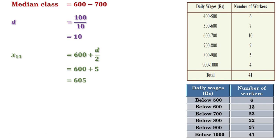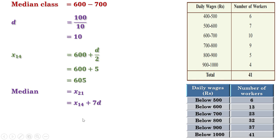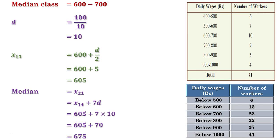The median is the 21st term. We know the 21st term equals the 14th term plus 7 times the common difference. The 14th term is 605 and the common difference is 10. So the median equals 605 plus 7 times 10, which equals 605 plus 70, giving us 675. Therefore, the median wage is 675.